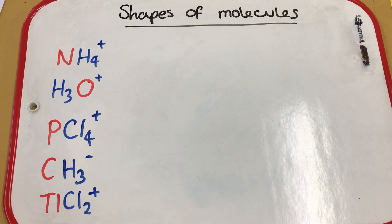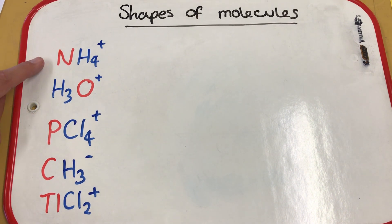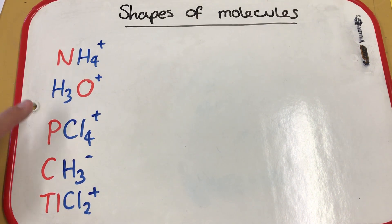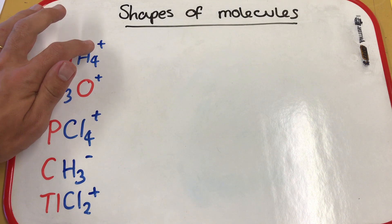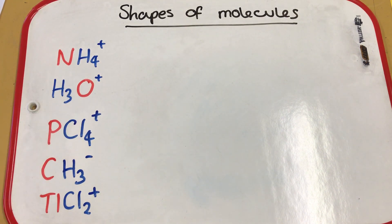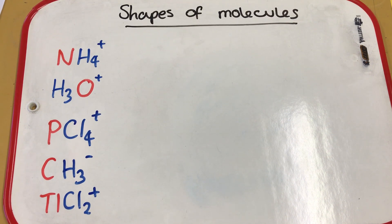In this tutorial we're going to cover some more shapes of molecules. As you can see, we've got a range of different molecules, each one has a charge on them. We're going to look at the shapes that you get when you have different charges. It doesn't make things much more complicated, but you do need to take this charge into account when working out shapes.